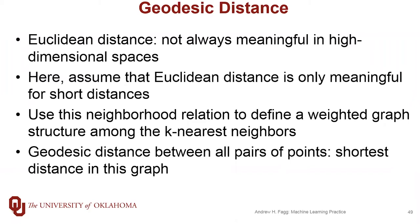With geodesic distances, we're going to make the assumption that Euclidean distance is meaningful for very short distances, but we're going to ignore anything larger than that. And this is going to end up like in locally linear embedding. We're going to use these nearby points to define a neighborhood, and ultimately we're going to set up a graph of points in our original space. And then we're going to define the geodesic distance as the distance that we have to walk from one point to another along this graph.